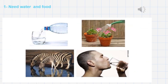The first thing you need to know about living things is that they need water and food. Repeat after me: need water and food. People need water and food. Animals need water and food. Plants need water and food.